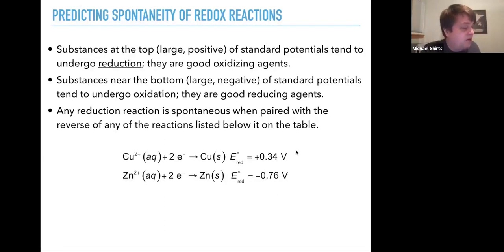So here, for example, we've got copper two plus and it's reducing to form copper solid. And that has a standard potential of reduction of 0.034 volts and zinc has a reduction potential of minus 0.76.